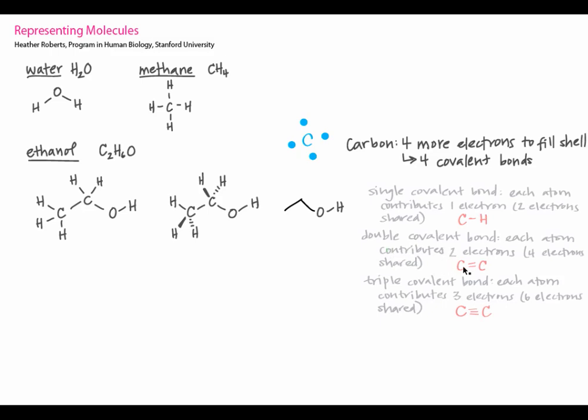Carbon could have four single covalent bonds and have a full valence shell. A double bond is formed when each atom shares two of its own electrons, and this would provide carbon with two more electrons that count toward its valence shell. Carbon could have two double bonds and have a full valence shell. Any combination of single, double, and triple bonds that results in four extra electrons shared with carbon fills carbon's valence shell.